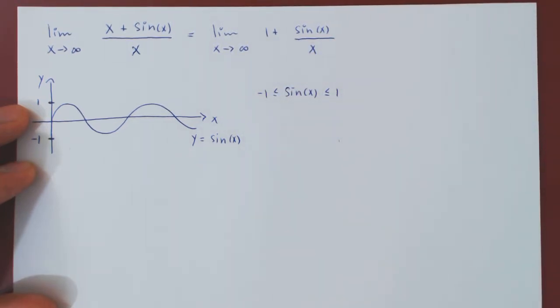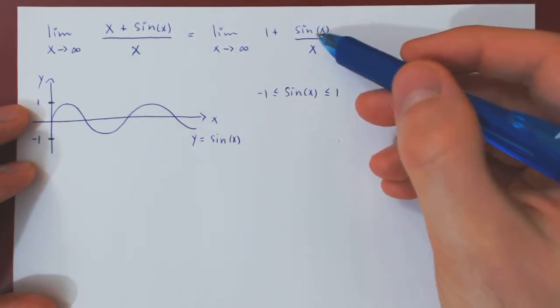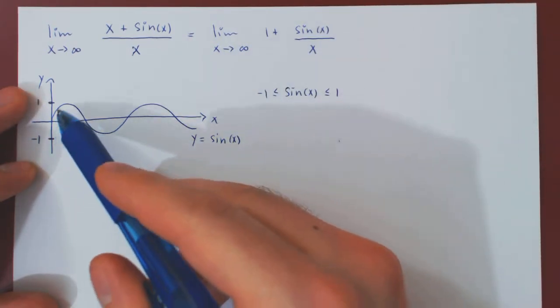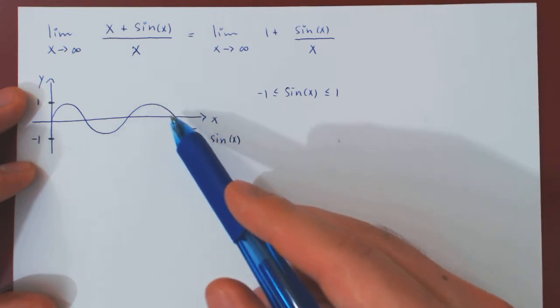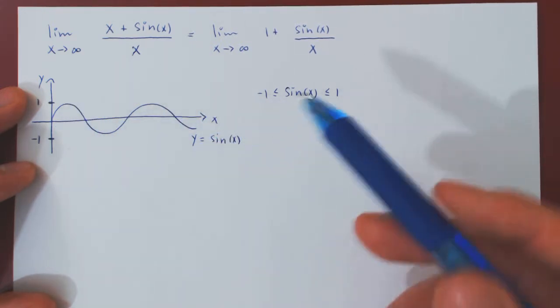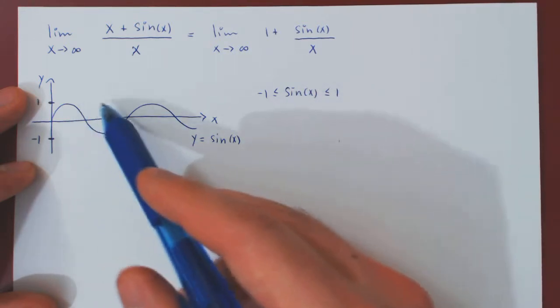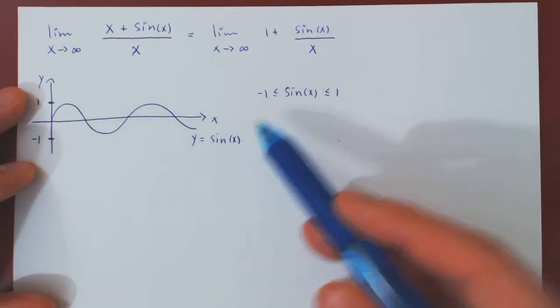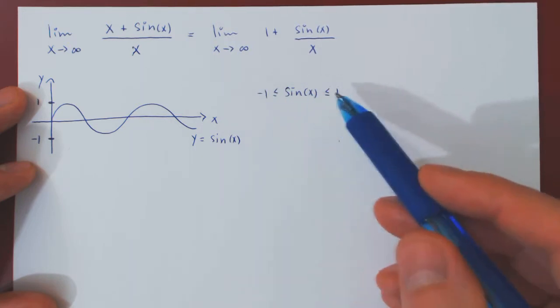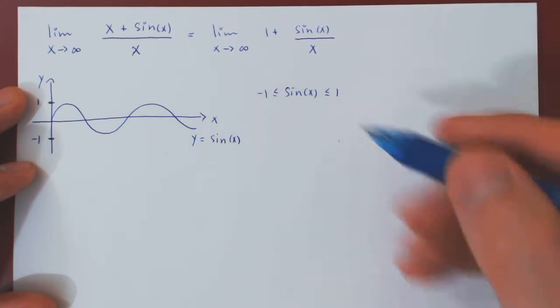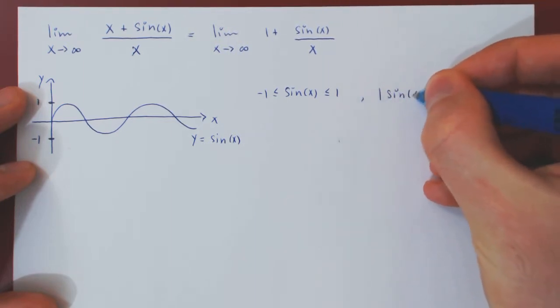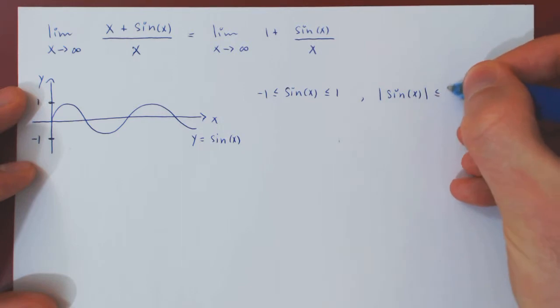So let's use our intuition here. We have a fraction. As x tends to infinity, sine of x does not converge to any one particular value. It keeps oscillating forever. So, sine of x alone does not converge to a unique y value. But, for any x value, it always remains between negative 1 and 1. So, in absolute value, sine of x is no bigger than 1.